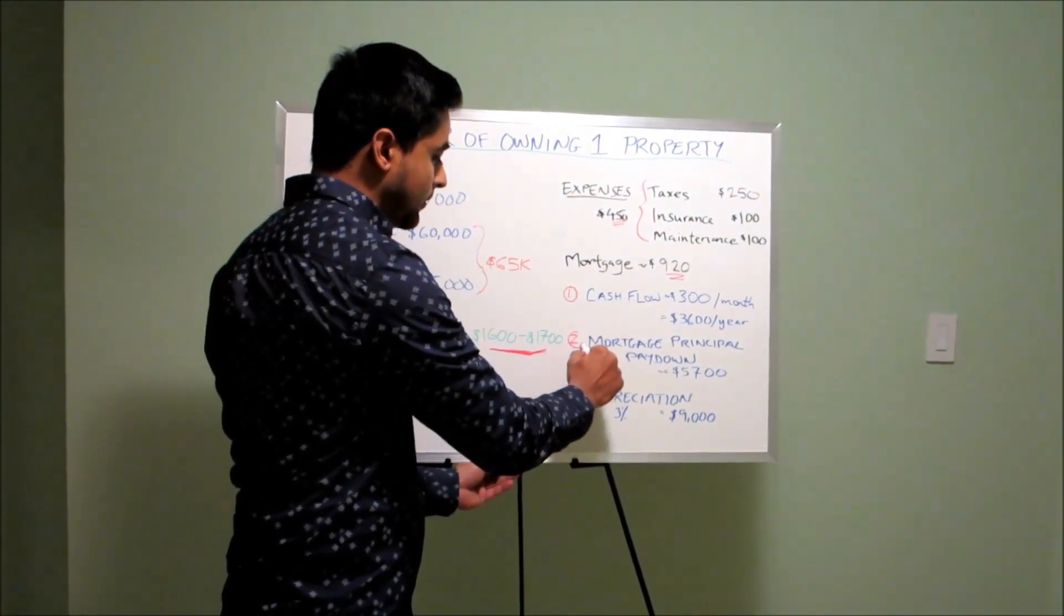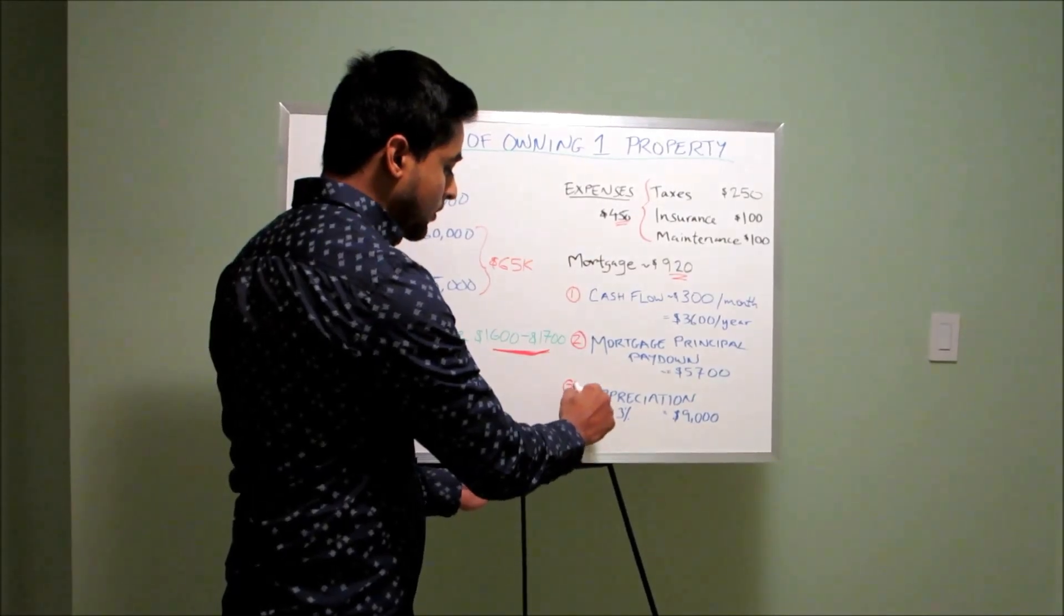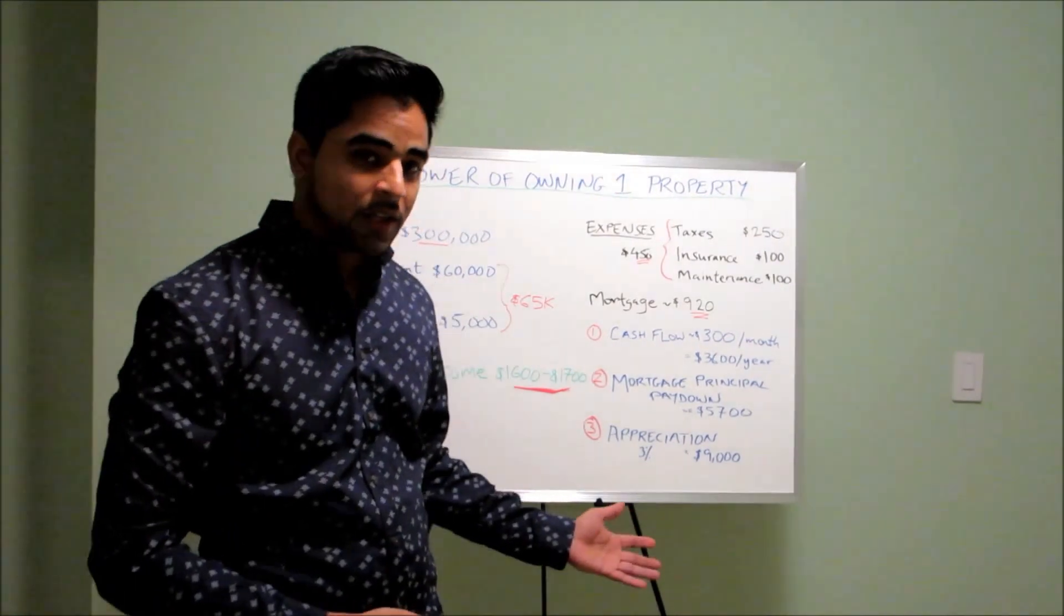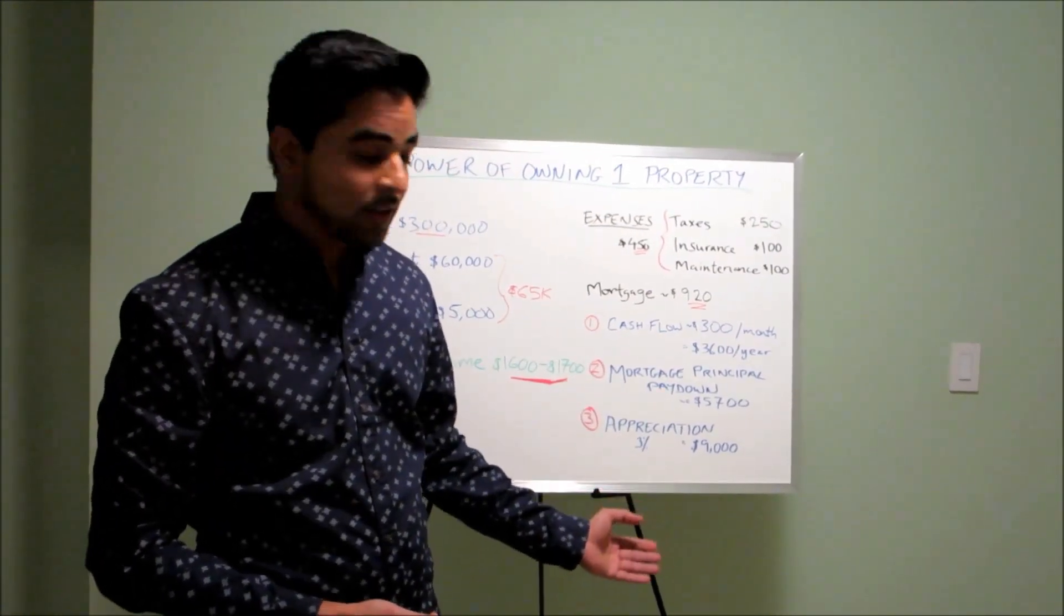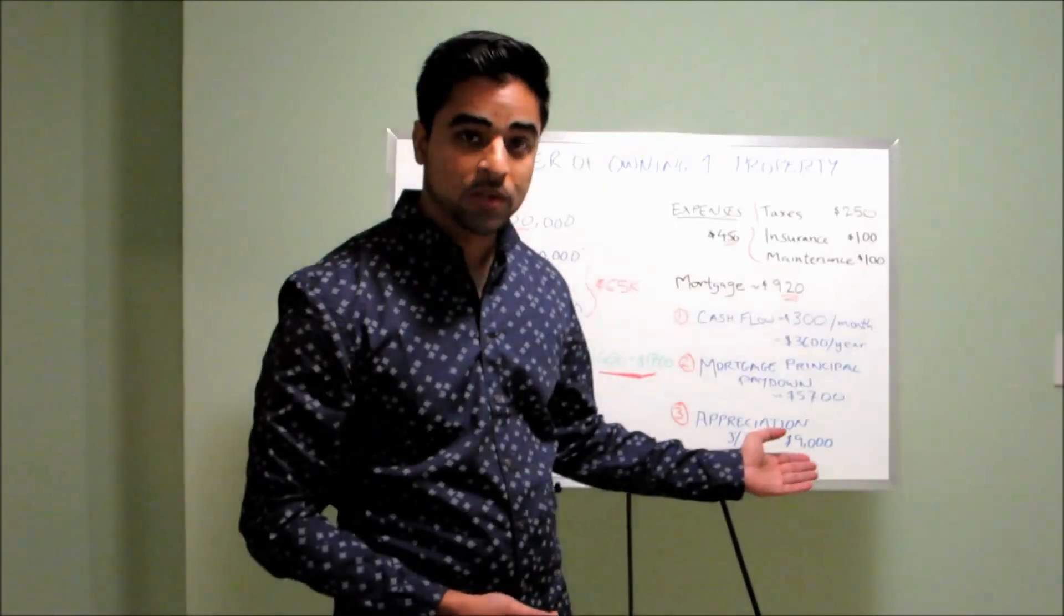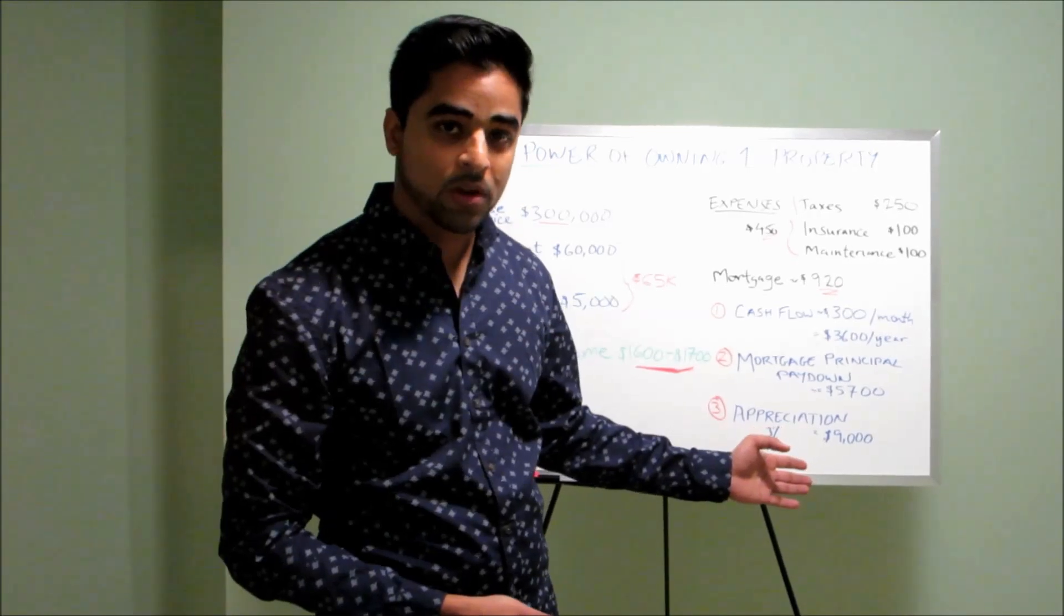Second way to make money, and the third way is the appreciation. So appreciation, very conservatively, let's account for just 3%. So on $300,000 at 3%, we're going to get about $9,000 appreciation in that one year time frame.